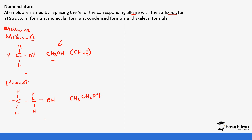For the skeletal formula of ethanol, it would be a bit hard to show because it just has two carbons, but that's how it would look. From the third member onwards, it becomes easier to show the skeletal formula.